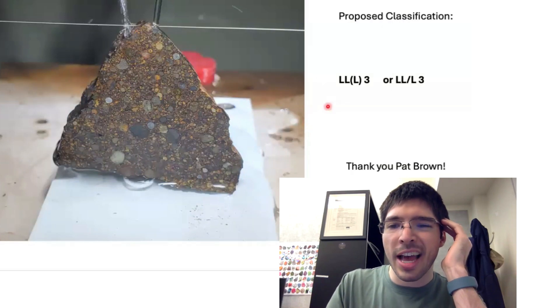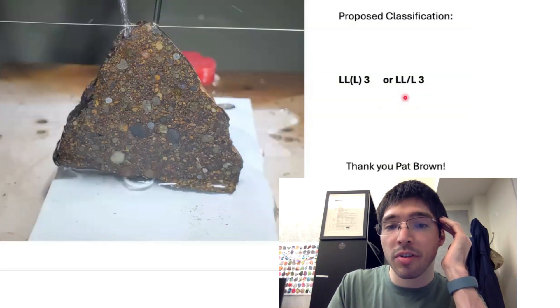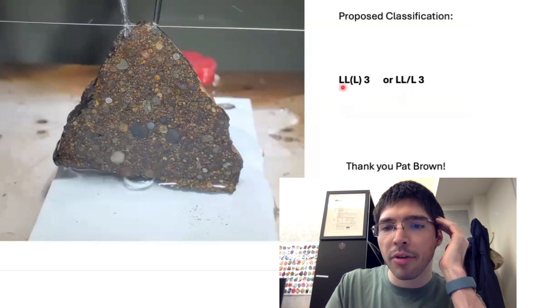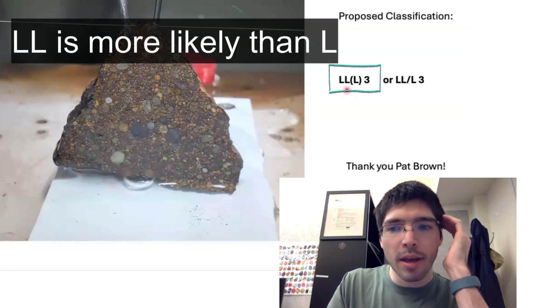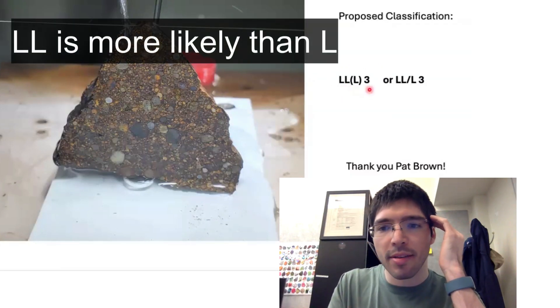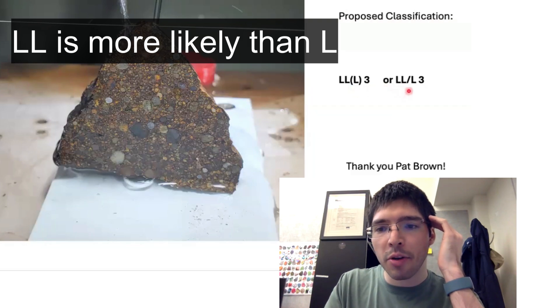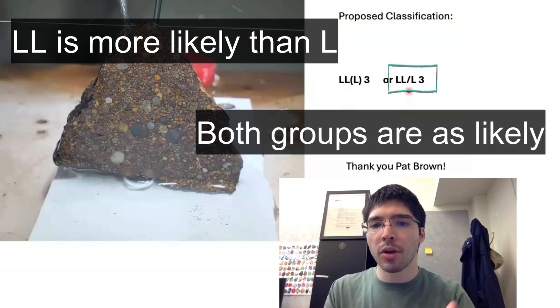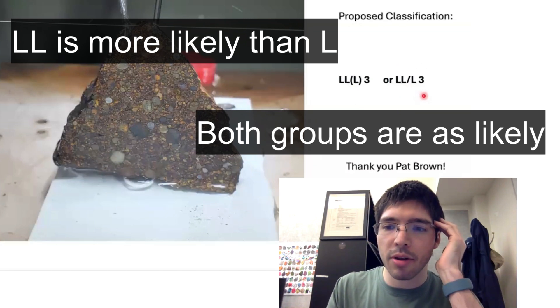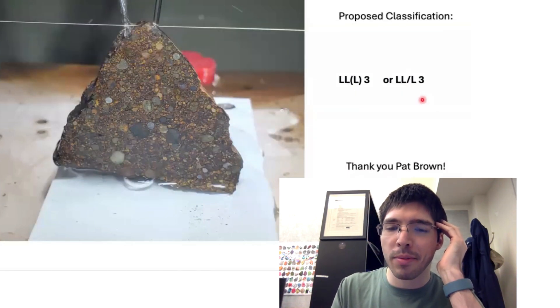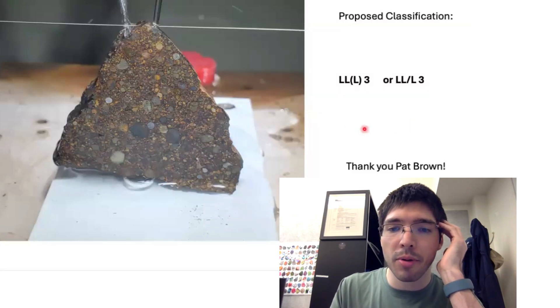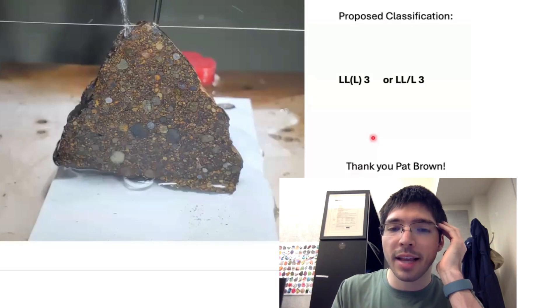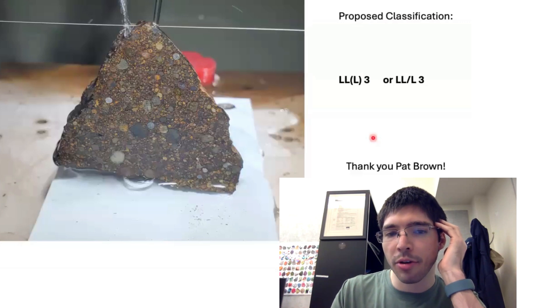For this sample, I have two sorts of ideas, and I'm going to submit this sample later today. I'm thinking I'm either going to do LL and then open parentheses L, what that means is that LL is the likely group but it still could be L, and then 3 just means that it's a type 3. Or I'm going to do it as LL/L, which means both of them are possible for the classification. I'm still kind of thinking about which of the two I'm going to do, but so far that's the two classifications I have proposed for this sample.